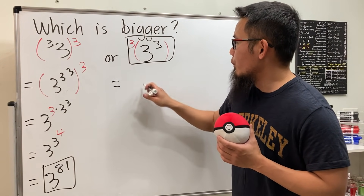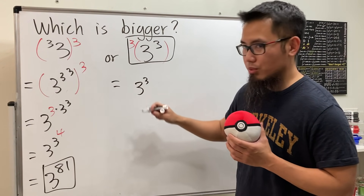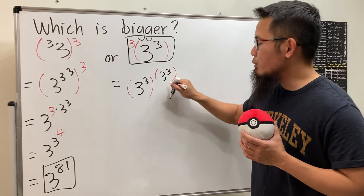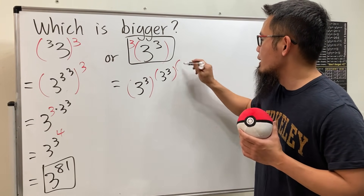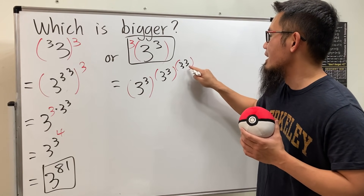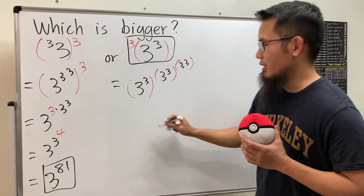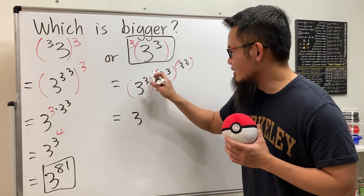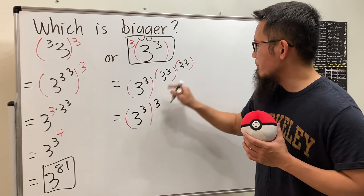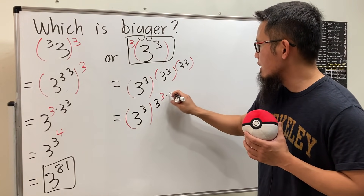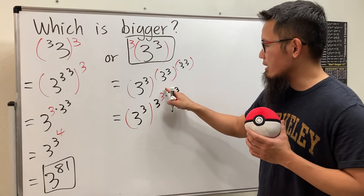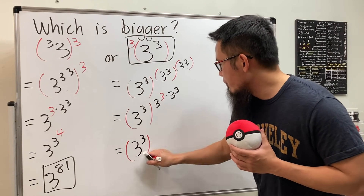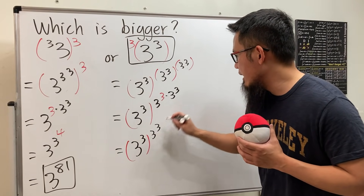Now if you look at this other expression, it means: look at the inside, which is three to the three, and then raise that to the three to the three, and then one more time — so you get three to the three here. I'm going to fix the exponent again by multiplying. So this is three to the three, and then three times three to the three, adding the powers together, which becomes three to the three raised to three and then four.